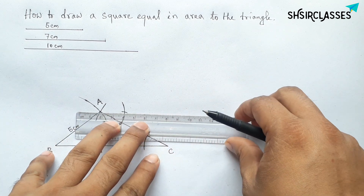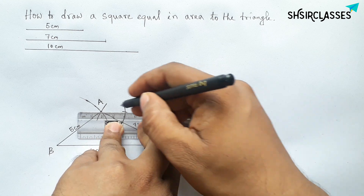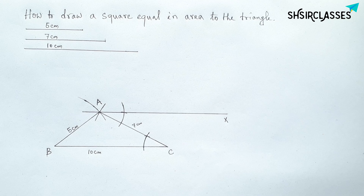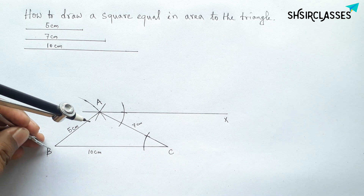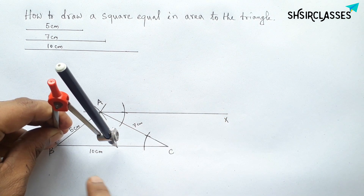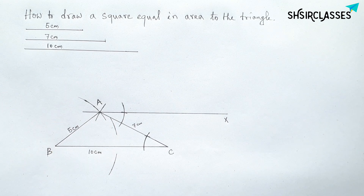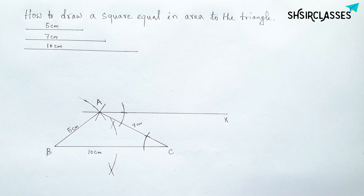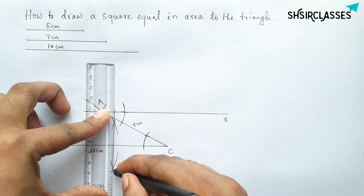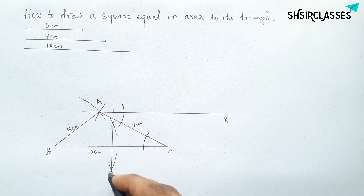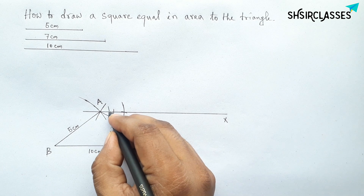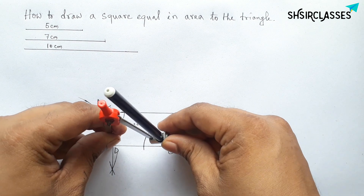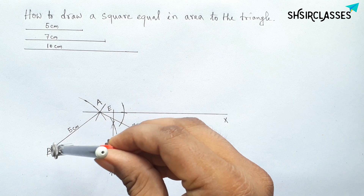This line through A is parallel to BC; label a point on it as X. Next, bisect line BC by taking a length greater than half of BC and drawing arcs from both B and C with the same compass length. The arcs intersect and bisect BC at point D, with the midpoint labeled E.